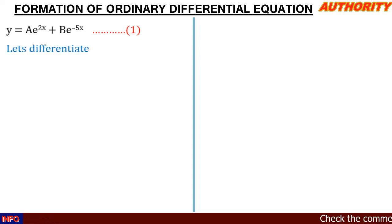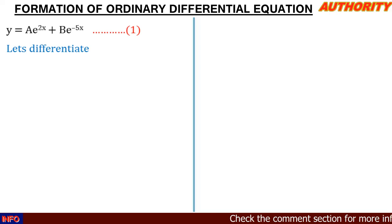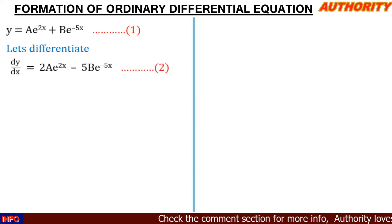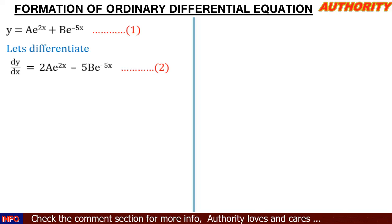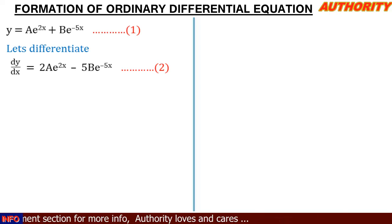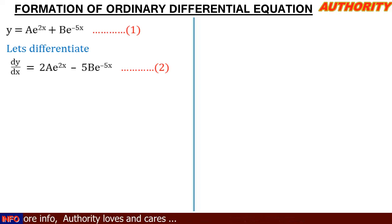Let's call this equation one. Let's differentiate the first time with respect to x. Differentiating with respect to x, we are going to have dy/dx = 2ae^(2x) - 5be^(-5x). Let's call this equation two.